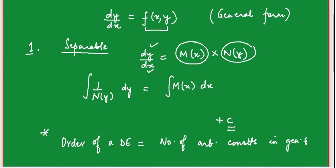Keep in mind: if you are solving a first order first degree differential equation, since the order is one, do not write c1 for one integral and c2 for another. Even if you write them separately, in the end combine them into a single arbitrary constant in the general solution. The general solution of any differential equation should have as many arbitrary constants as the order of the differential equation. Now let's take examples of the separable type.